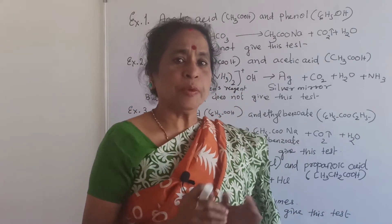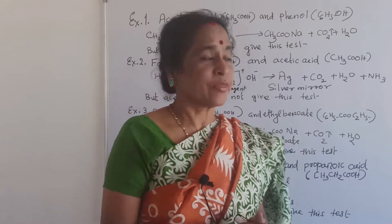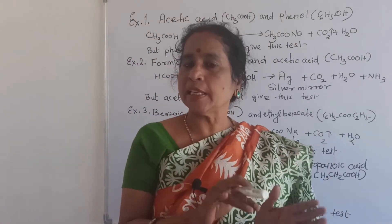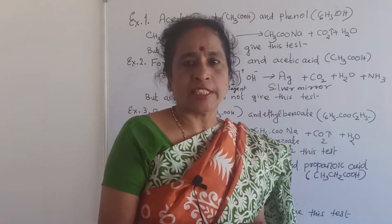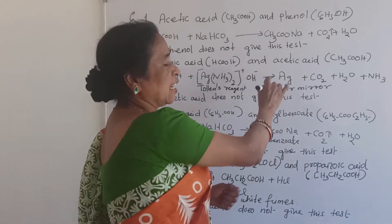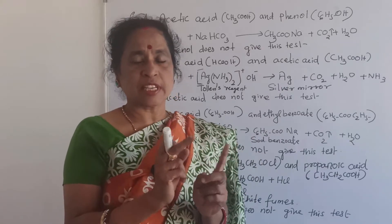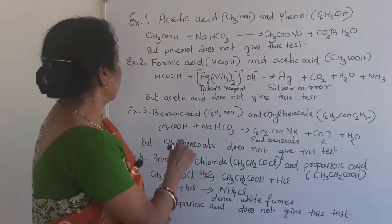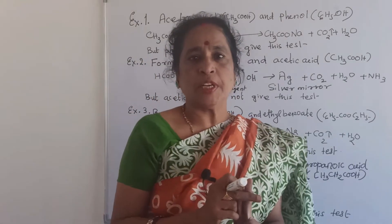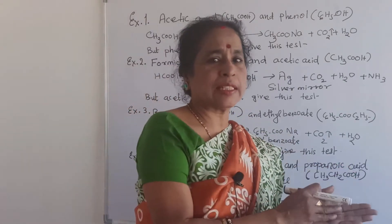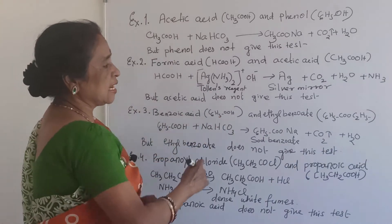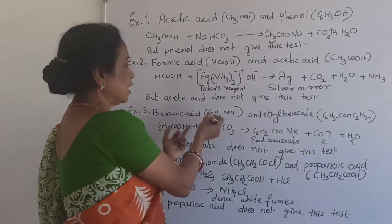Example 2: Formic acid and acetic acid. Both are acids, so both react with sodium hydrogen carbonate giving carbon dioxide. To distinguish them, use the Tollens' test. You take formic acid in a test tube, add Tollens' reagent, heat it, and get a shining silver mirror on the inner side of the test tube. Acetic acid does not give this test — this is the important test to distinguish formic acid from acetic acid.